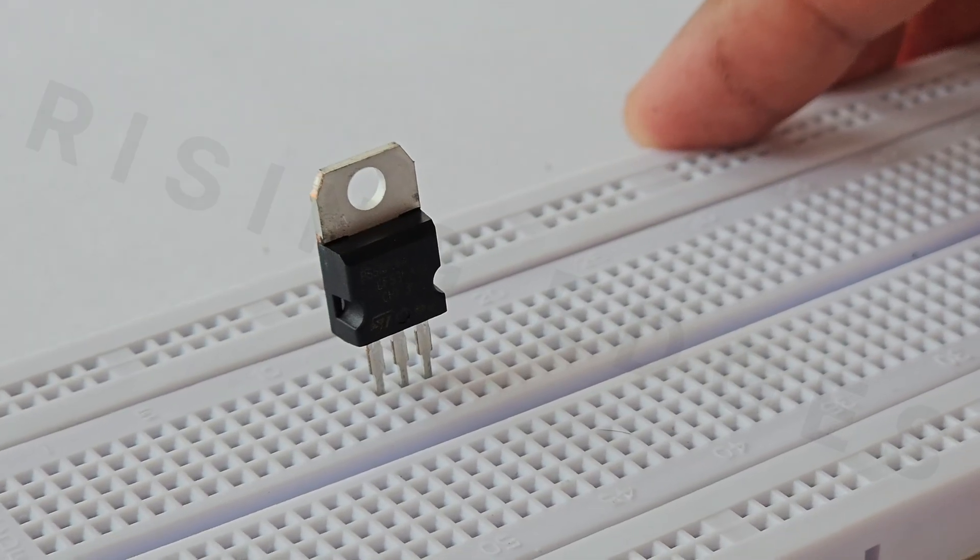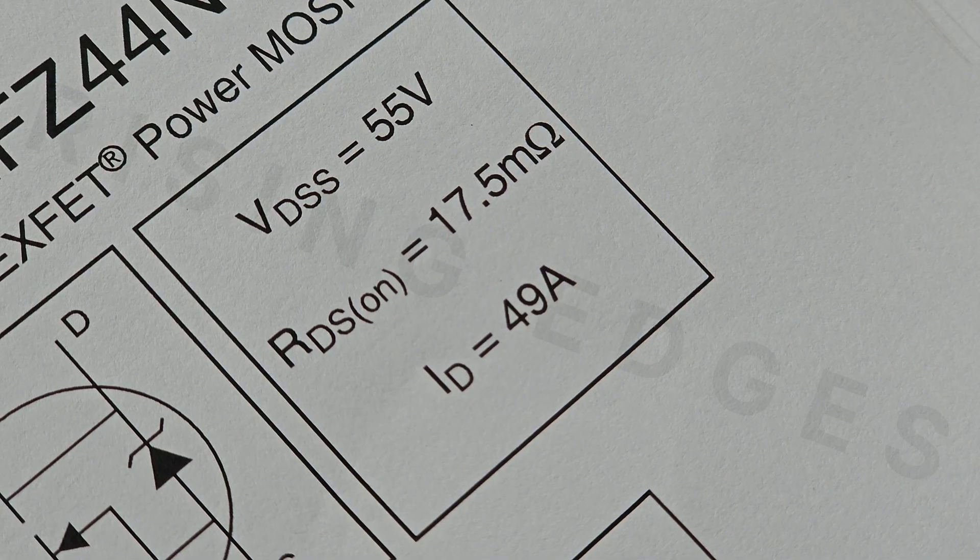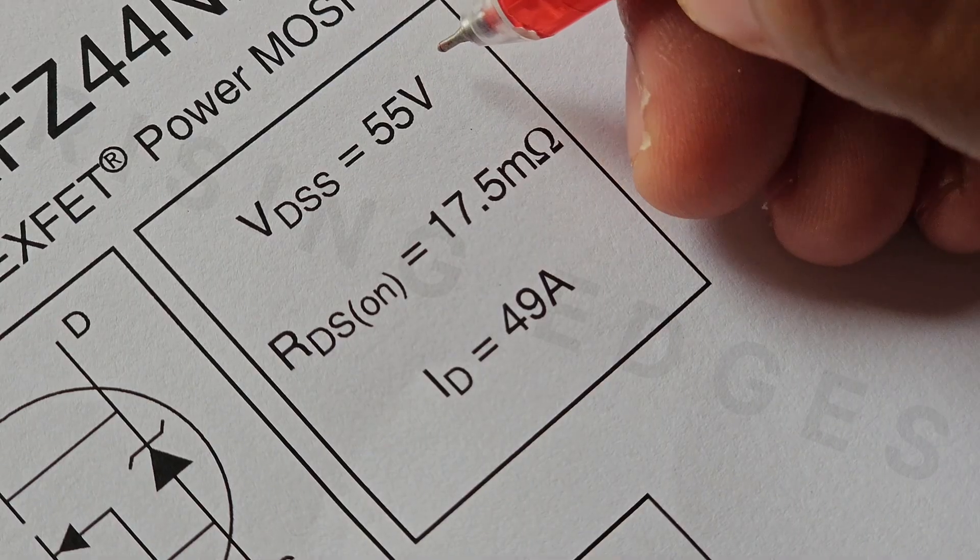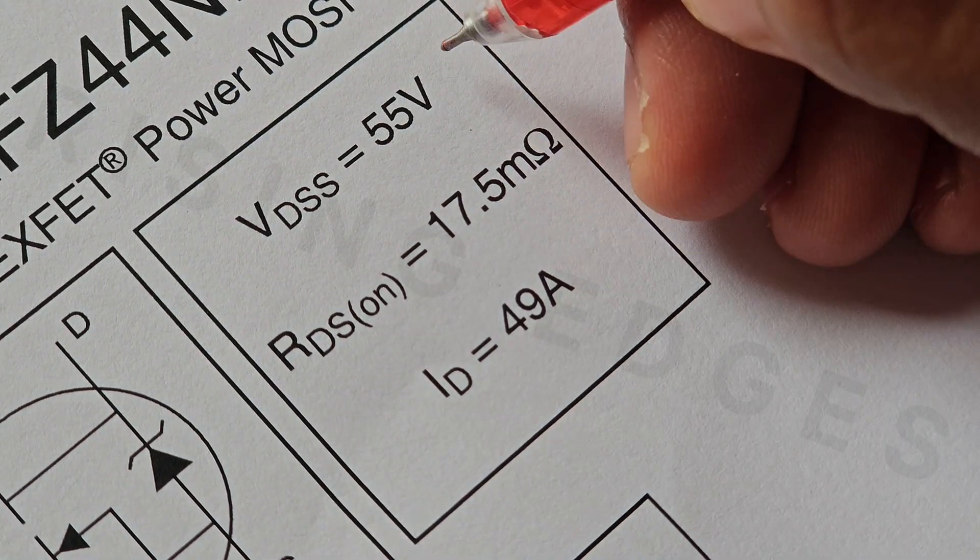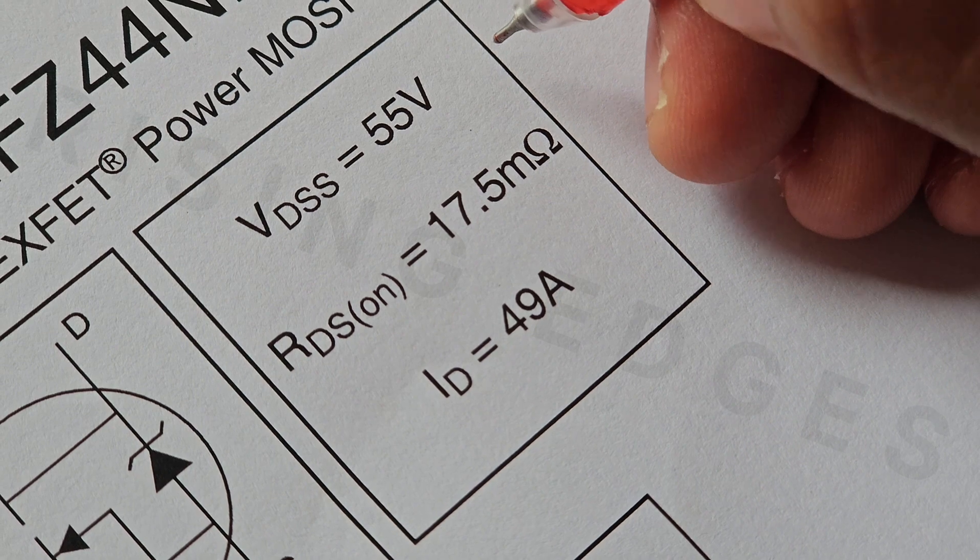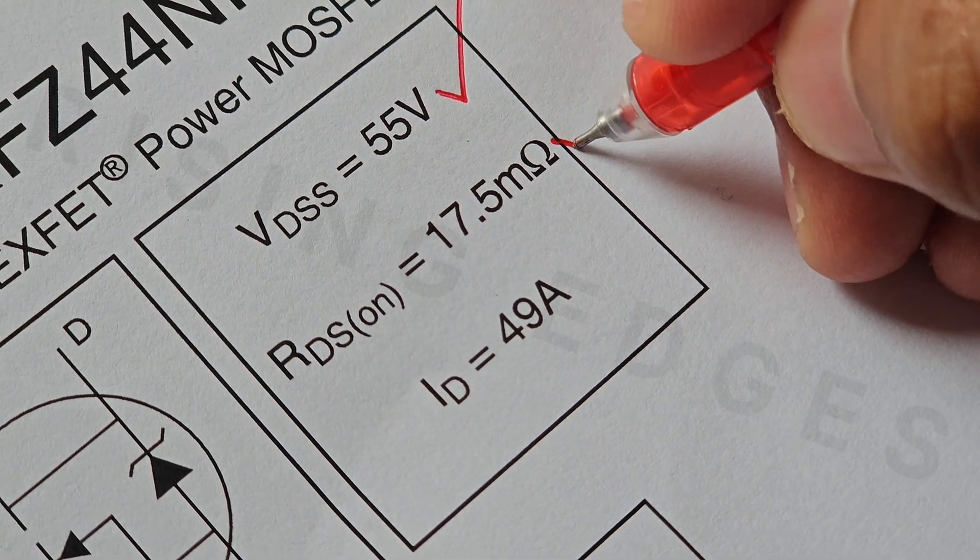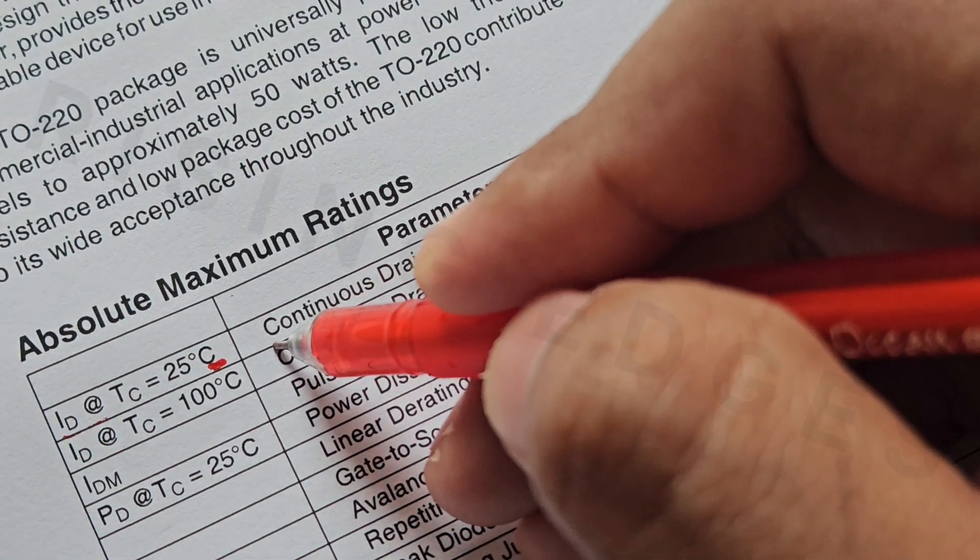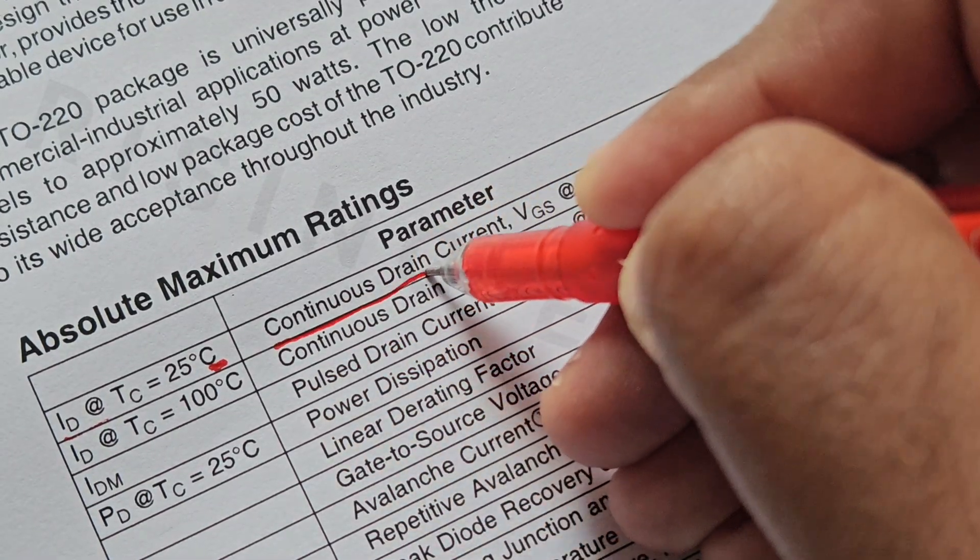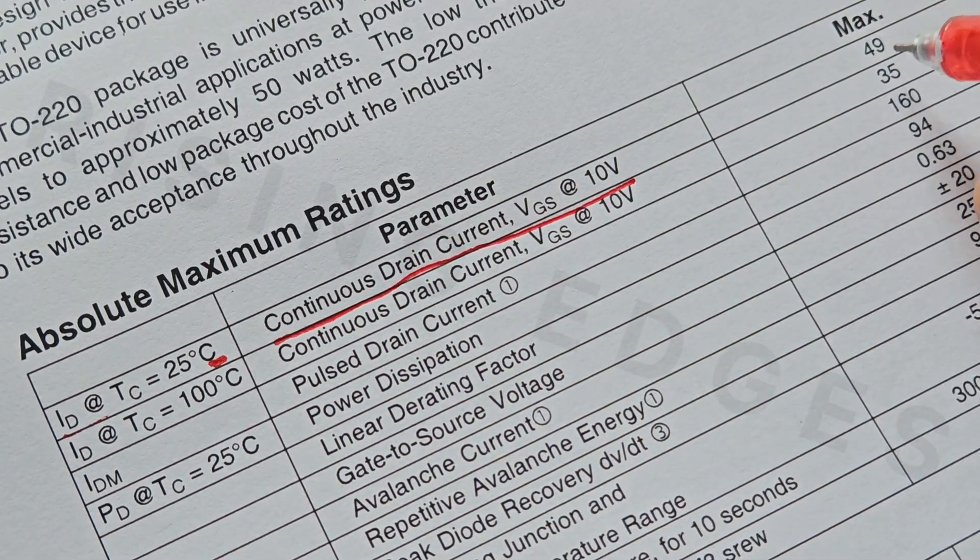For this application, I have selected the widely used IRF-Z44N, an N-channel MOSFET. According to the datasheet, it can handle up to 49A and has a drain source breakdown voltage of 55V with an on-state resistance of just 17.5 milliohms. But don't be misled by those numbers. These are ideal values measured at 25C in controlled lab conditions.